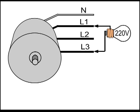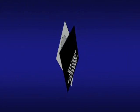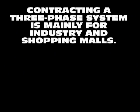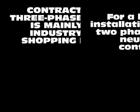The contracting of a three-phase system is done mainly for industry and shopping malls. For a household installation, generally only two phases and the neutral are contracted.